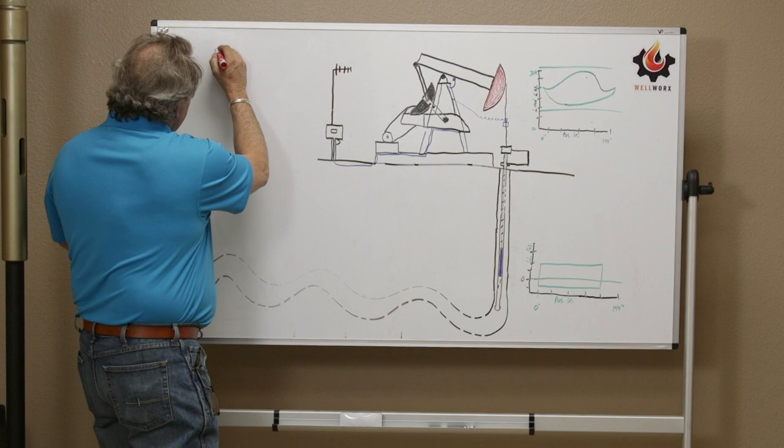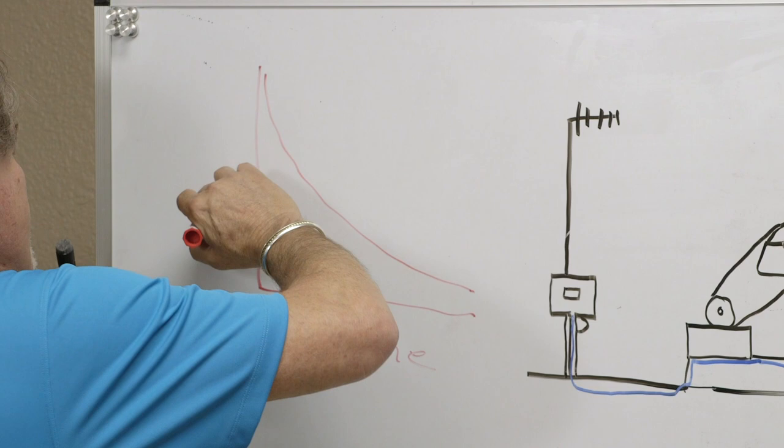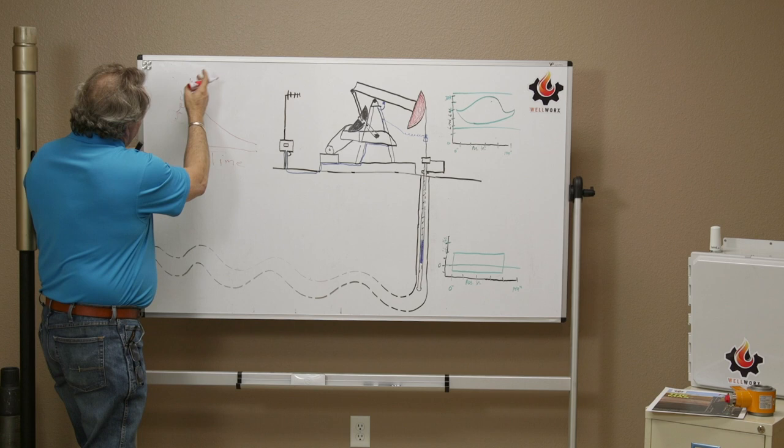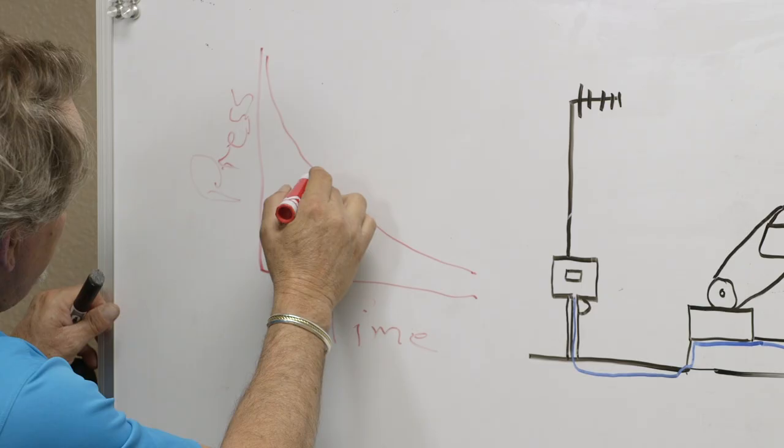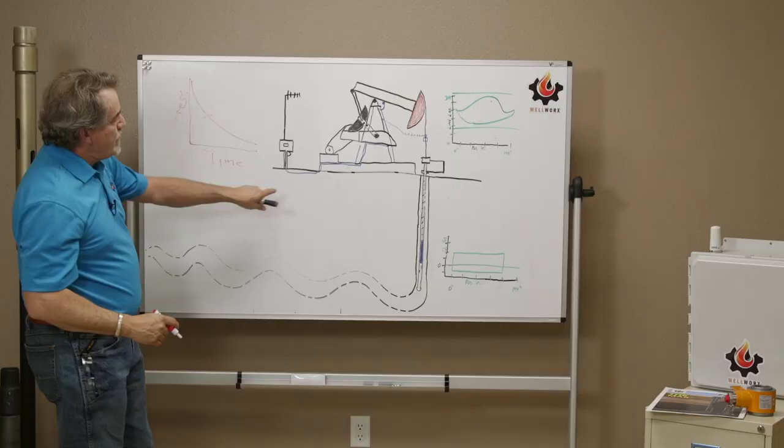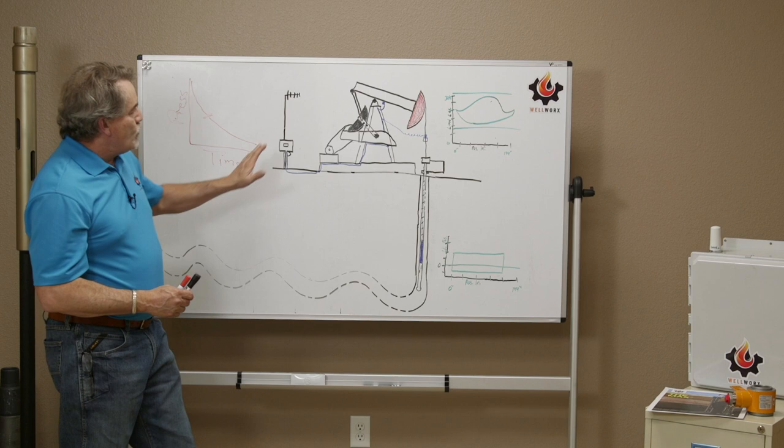But wells draw down, so the pressure, this could be a pressure decline on this well. This is time, this is pressure. As you start to flow the well, you reach a point where the well can no longer naturally flow to surface. Let's say that pressure point in time is here. And at that point, we've got to choose some form of artificial lift to deliver this fluid to surface. In this case, this is the rod pump system.